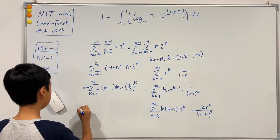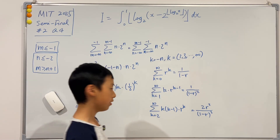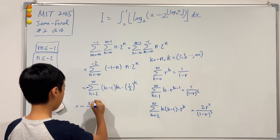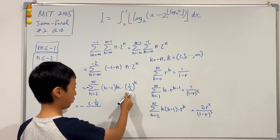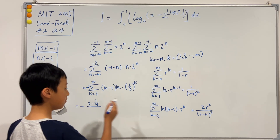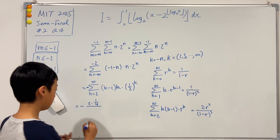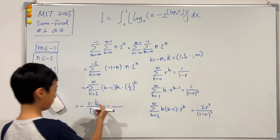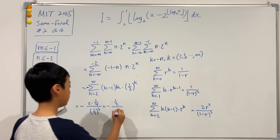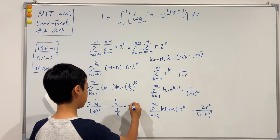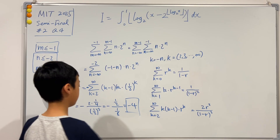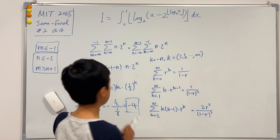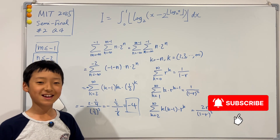Plugging in r = 1/2: we have negative times 2 times (1/2)^2 over (1 − 1/2)^3. That's negative times 2 times 1/4 over (1/2)^3, which is negative times (1/2) over (1/8), which equals negative 4.